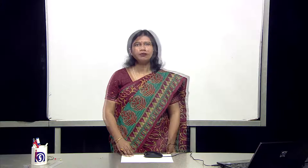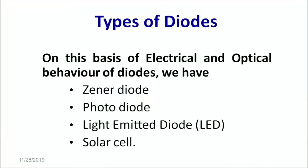Hello learners, welcome to NIOS studio. Today we are going to talk about different types of diodes. A simple p-n junction diode is what we have discussed in the previous lecture. Now on the basis of the electrical and optical behavior of the diodes, we have four different kinds of diodes which we are going to talk about.